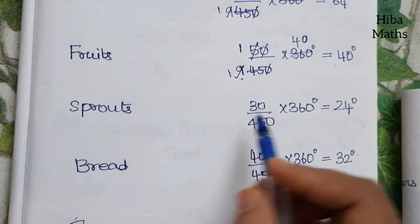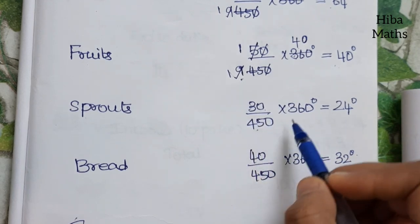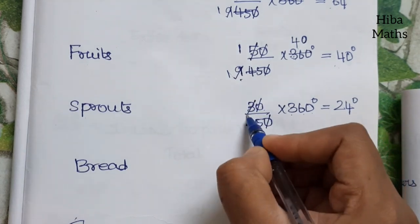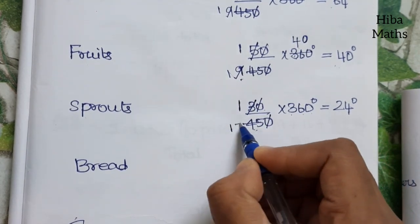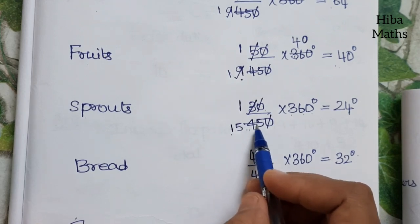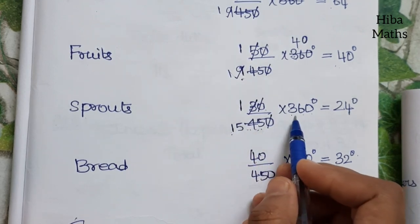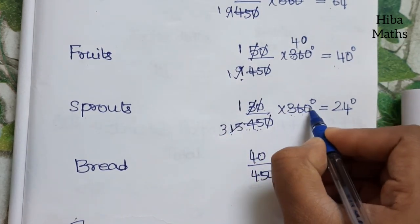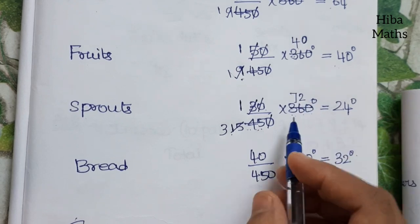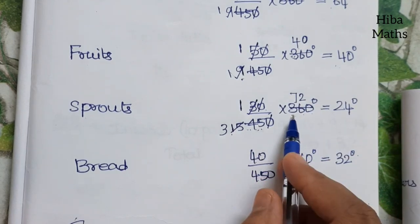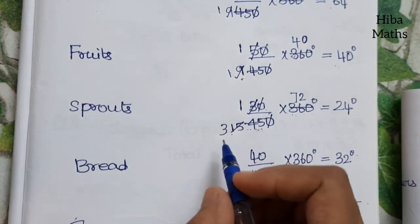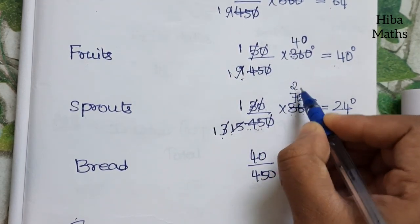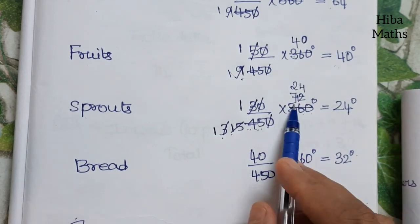For sprouts: 30 divided by 450, multiplied by 360. Cancelling and simplifying — 3 into 72, then further simplifying — gives us 24 degrees.